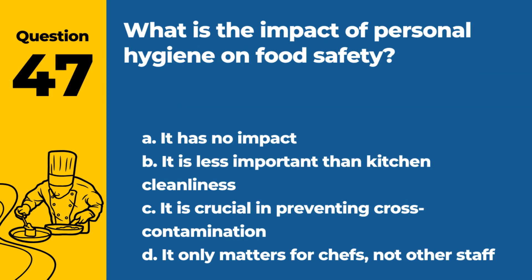Question 47. What is the impact of personal hygiene on food safety? A. It has no impact. B. It is less important than kitchen cleanliness. C. It is crucial in preventing cross-contamination. D. It only matters for chefs, not other staff. Answer: C. It is crucial in preventing cross-contamination. Personal hygiene is crucial in food safety, as it helps in preventing cross-contamination from staff to food.